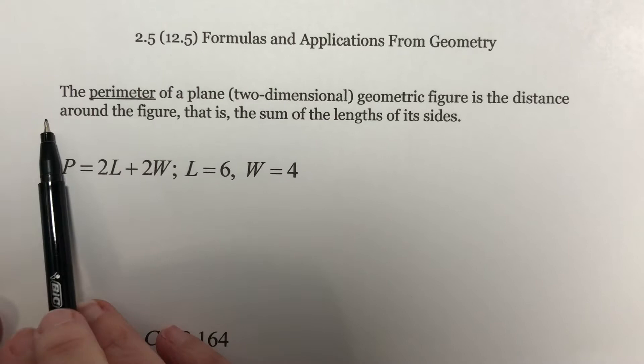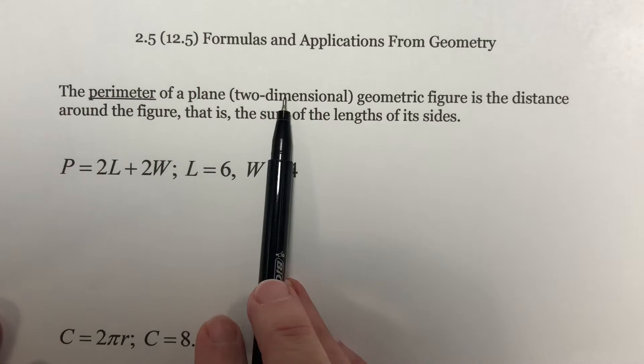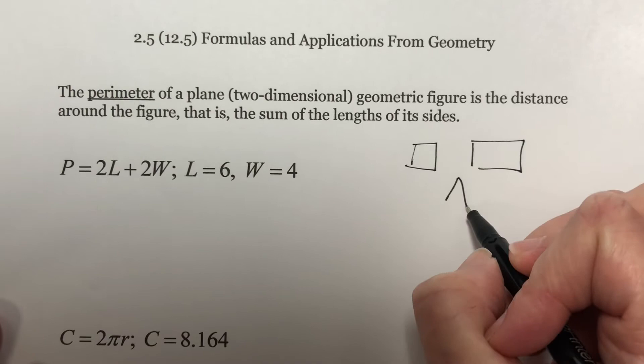First definition, the perimeter of a plane, two-dimensional geometric figure is the distance around the figure. That is, the sum of the lengths of its sides. This just means a 2D figure. It could be a square. It could be a rectangle. It could be a triangle. Just so long as it's not a three-dimensional thing. And we're talking about the distance all the way around.